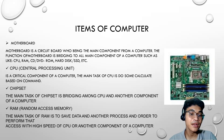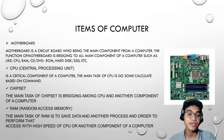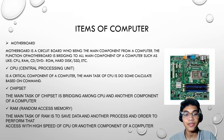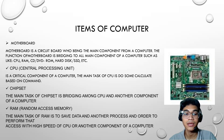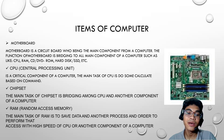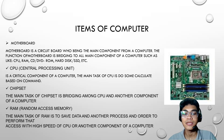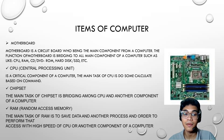The second one, we have the CPU, or central processing unit. CPU is a critical component of a computer. The function of a CPU is to perform calculations based on commands. And the next one is a chipset. The function of a chipset is to bridge the CPU and other components of a computer.